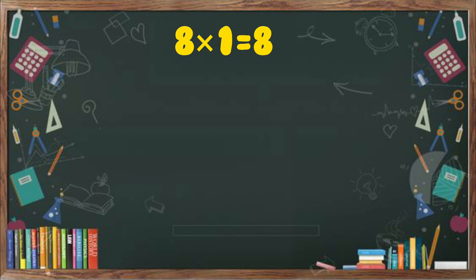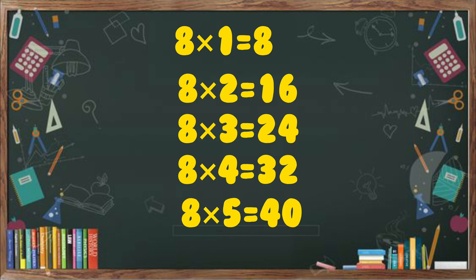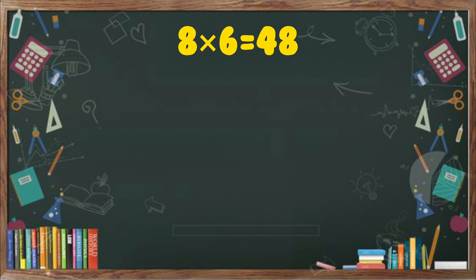8 ones are 8. 8 twos are 16. 8 threes are 24. 8 fours are 32. 8 fives are 40. 8 sixes are 48.